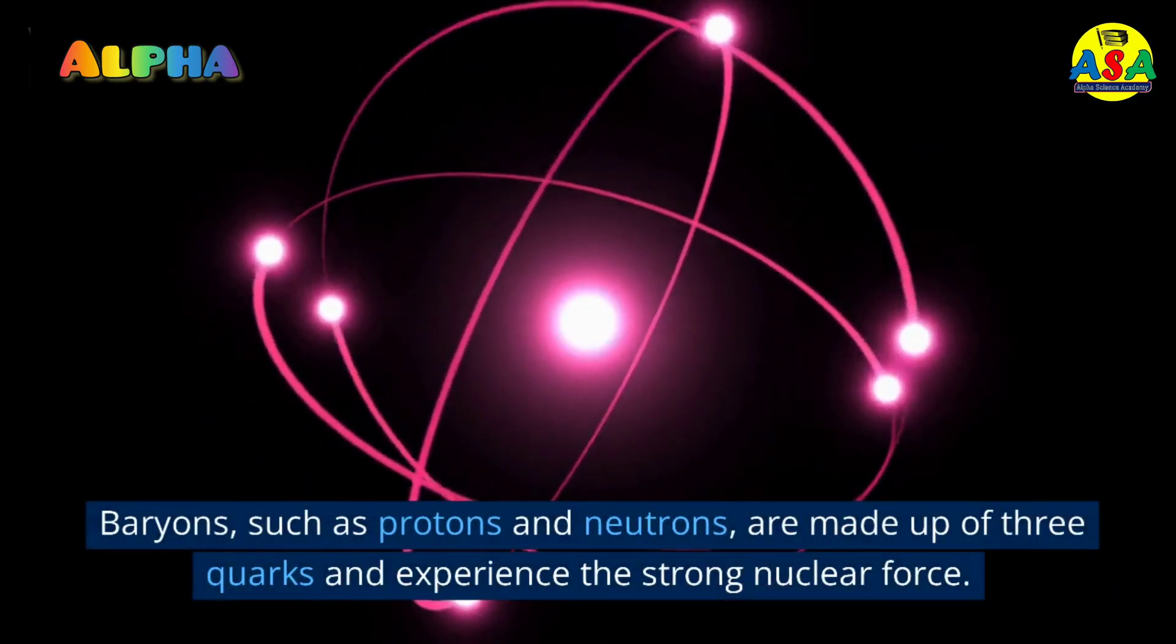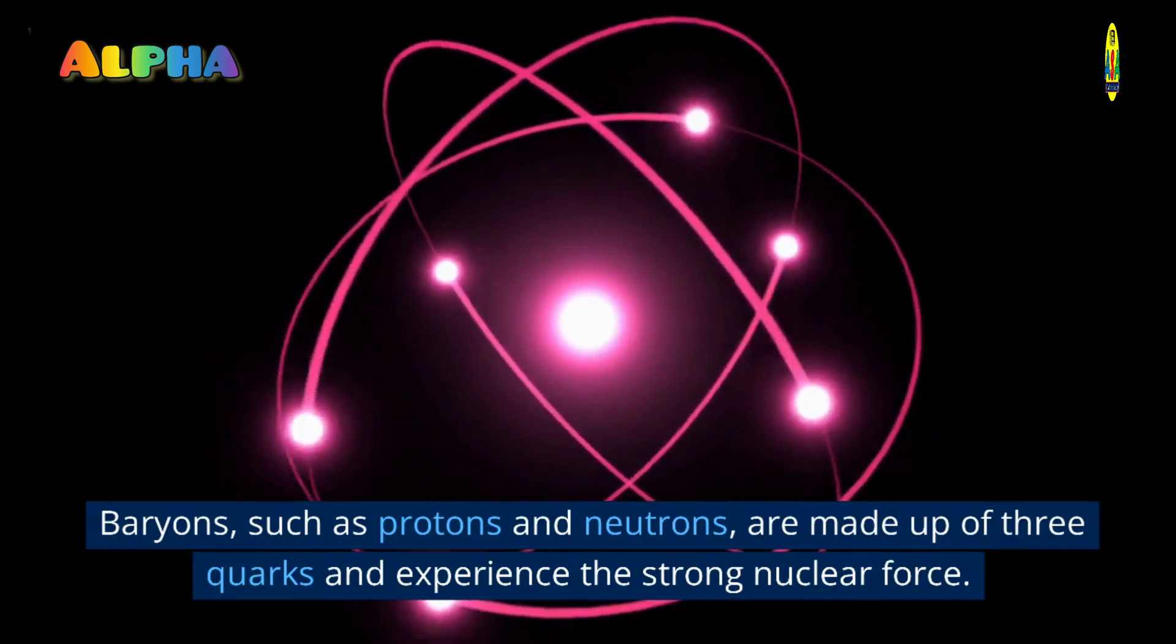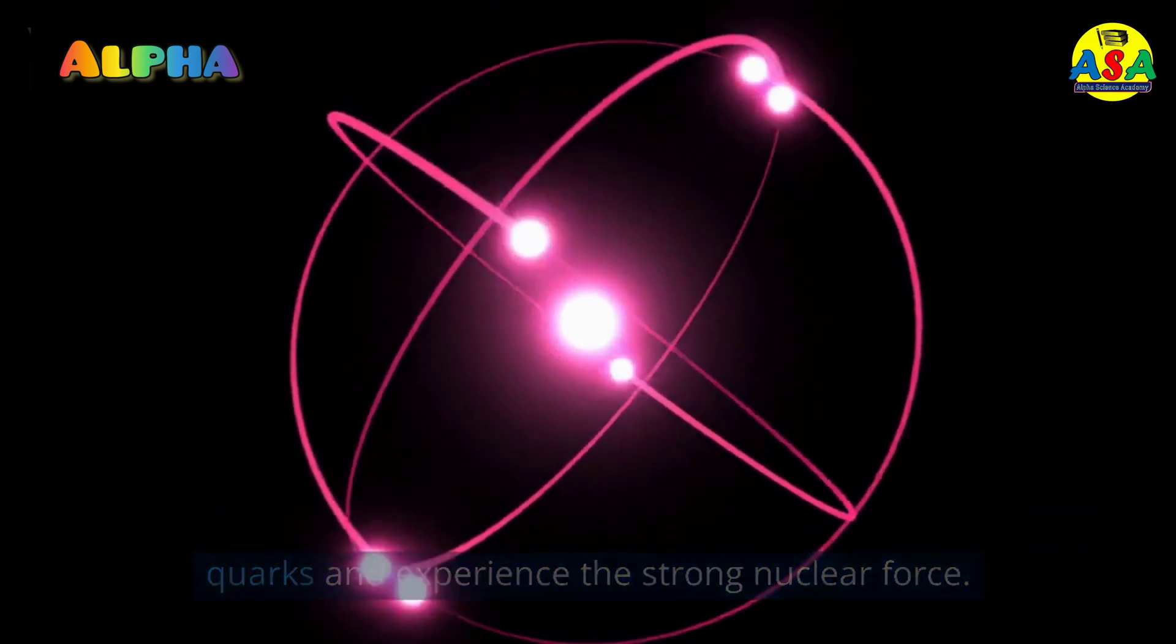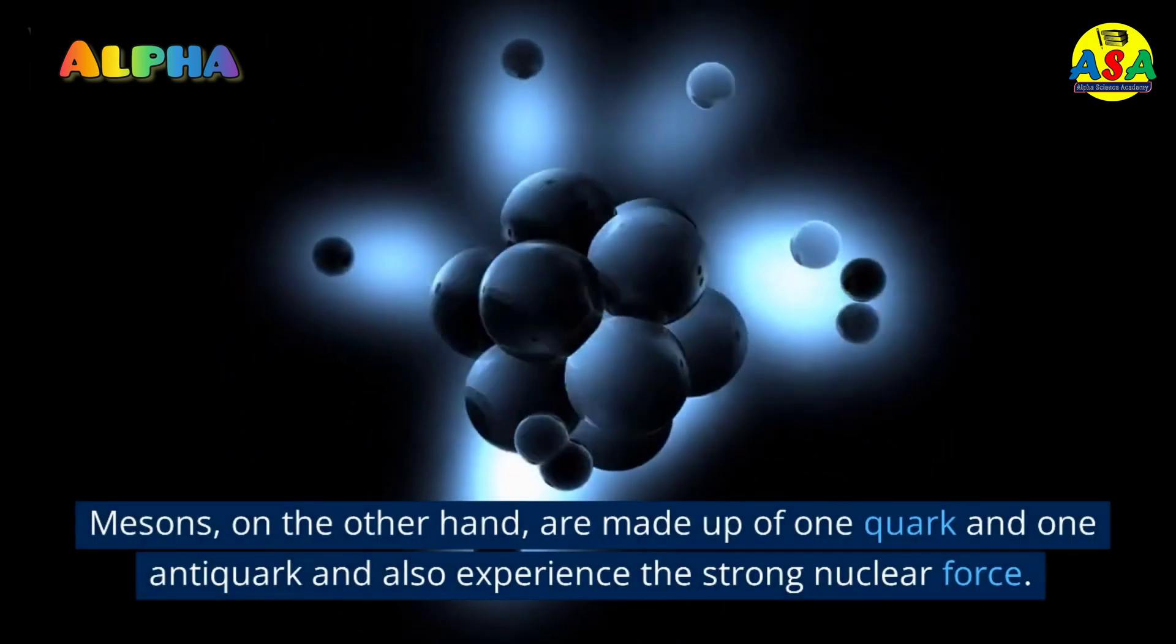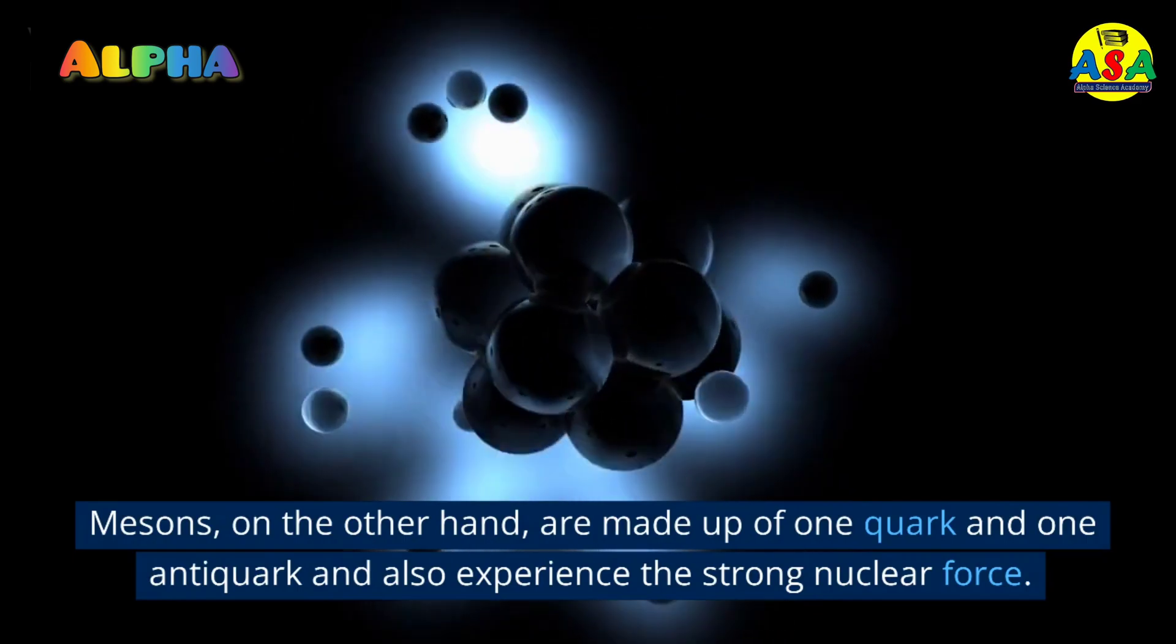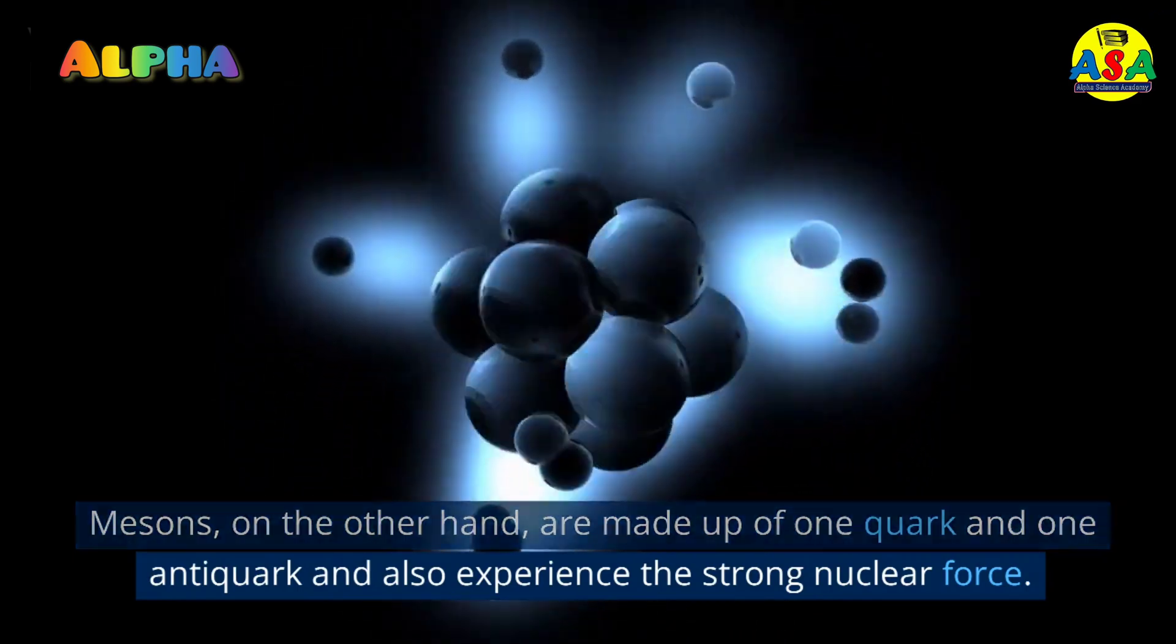Baryons, such as protons and neutrons, are made up of three quarks and experience the strong nuclear force. Mesons, on the other hand, are made up of one quark and one antiquark and also experience the strong nuclear force.